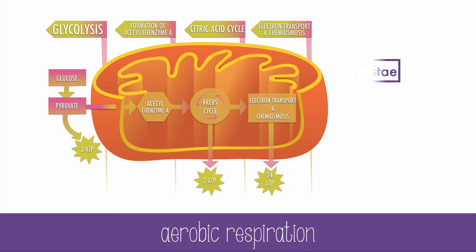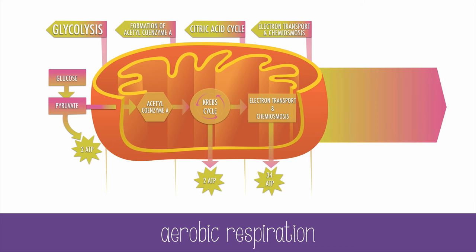In the end, aerobic respiration can make up to 38 total ATP theoretically, but usually it's a bit less than that — more like 30 to 32 ATP. So the final reaction is: glucose plus oxygen yields 6 CO2 and 6 water, plus energy in the form of ATP. And lots of it.